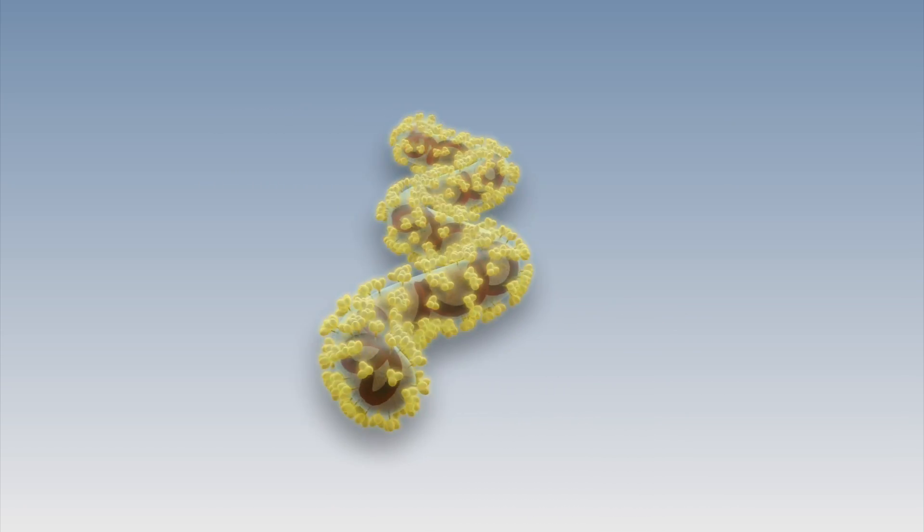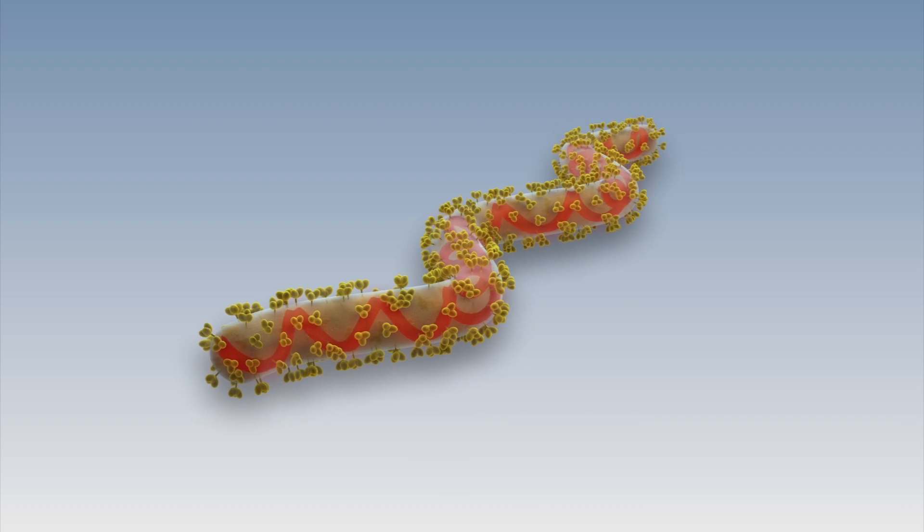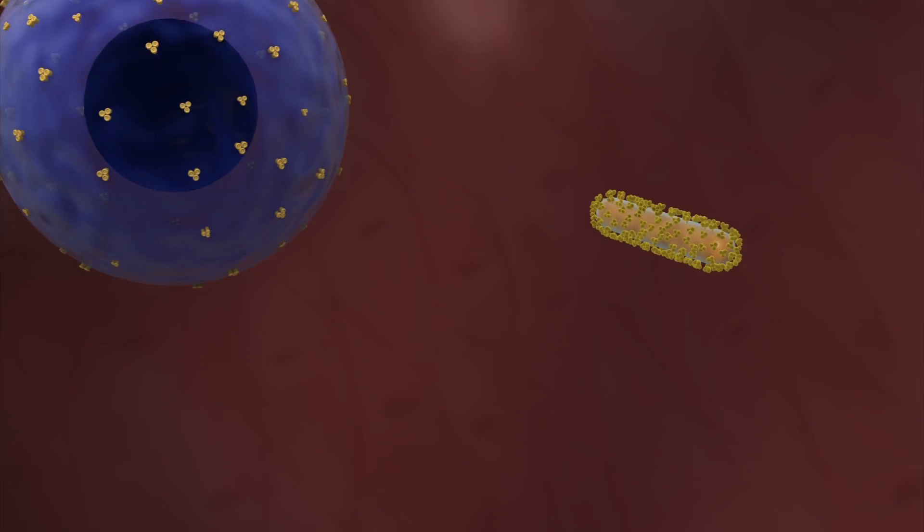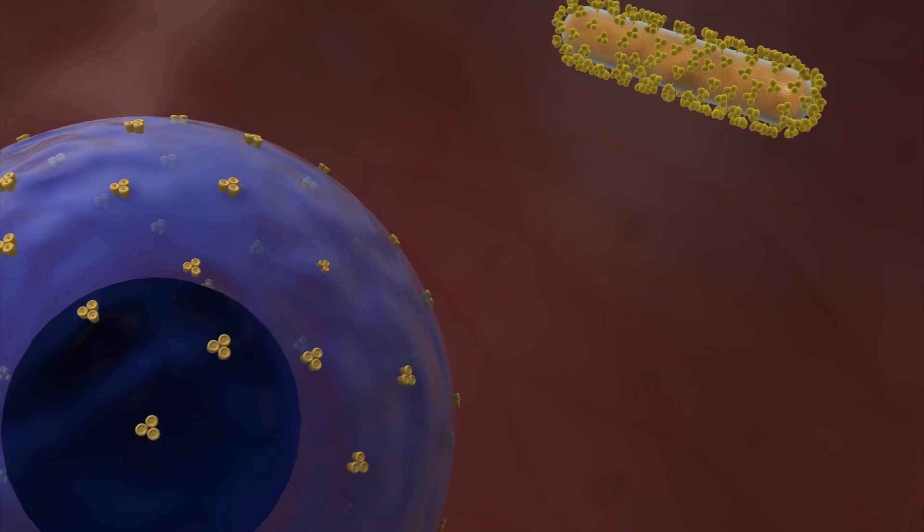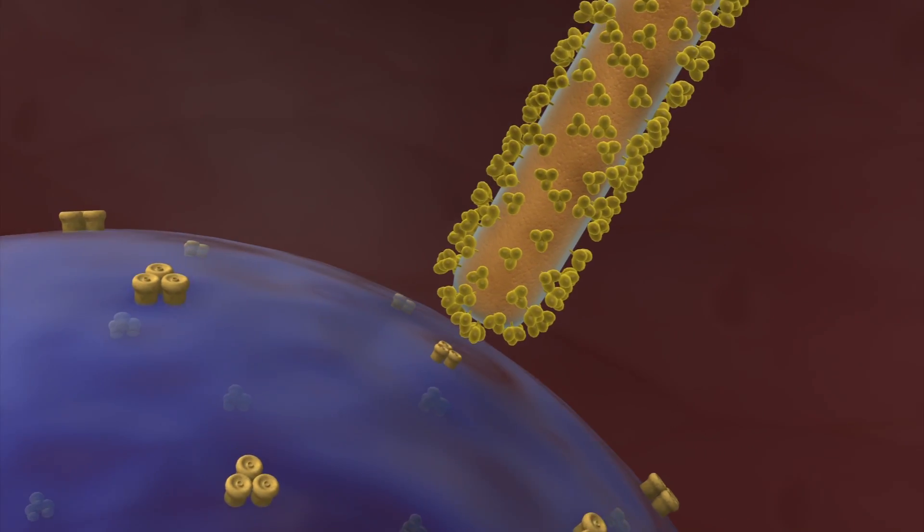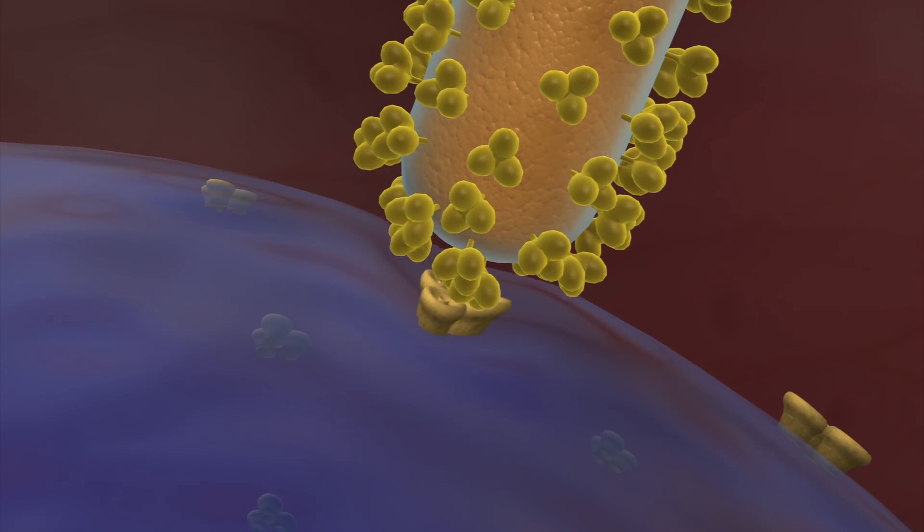The Ebola virus consists of a shell of glycoproteins surrounding genetic material, a single-stranded RNA. The glycoproteins attach themselves to receptors in human cells so as to invade them.